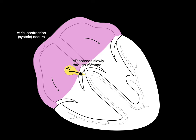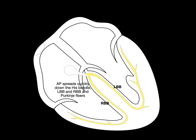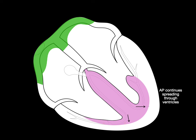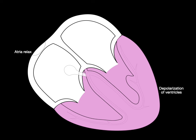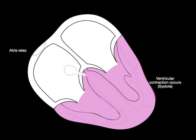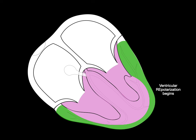The action potential spreads slowly through the AV node down to the bundle of His, and then quickly down the bundle branches to the Purkinje fibers, initiating depolarization of the interventricular septum. The action potential continues spreading through the ventricles as simultaneously atrial repolarization begins. Once atrial repolarization is complete the atria relax, and when depolarization is complete in the ventricles they contract — that's systole — then the ventricle starts to repolarize until repolarization is complete.